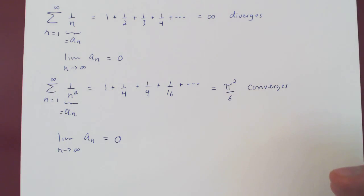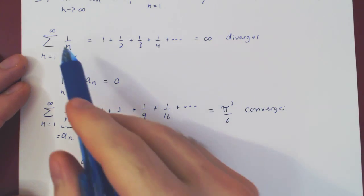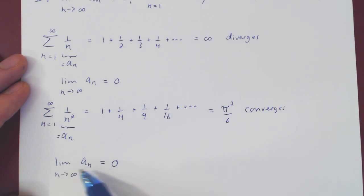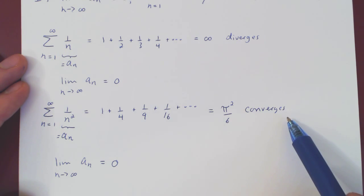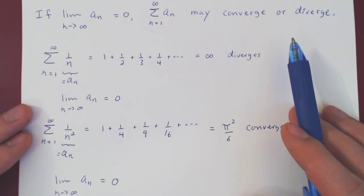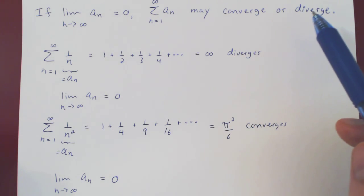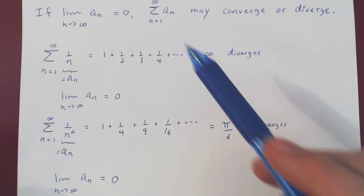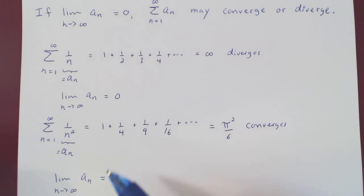So hopefully I've made my point. In each case we have an infinite series where the individual terms are shrinking to 0. In one case, the series blows up and therefore diverges. In the other case, the series returns a finite number and therefore converges. If the terms you are summing converge to 0, you cannot conclude anything — you may have divergence in some cases and convergence in others. The terms have to shrink to 0, and they have to shrink to 0 quickly enough.